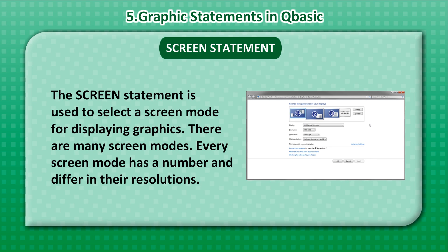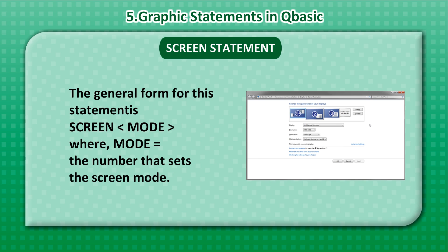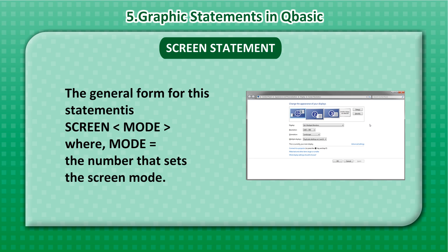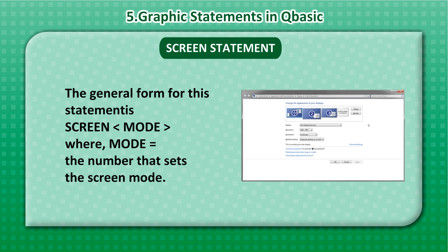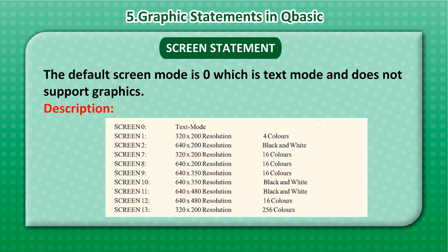The Screen Statement is used to select a screen mode for displaying graphics. There are many screen modes, and every screen mode has a number and differs in its resolution. The general form for this statement is: SCREEN mode, where mode is equal to the number that sets the screen mode. The default screen mode is 0, which is text mode and does not support graphics.